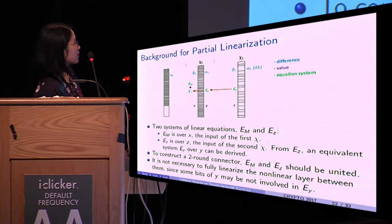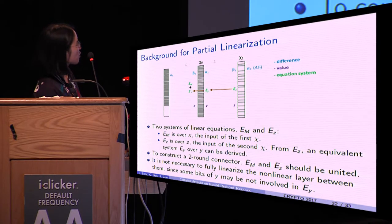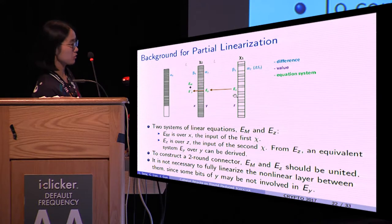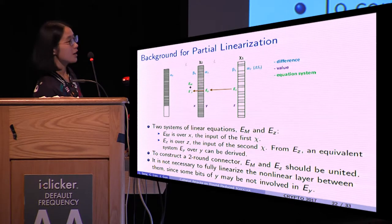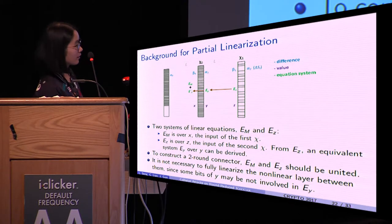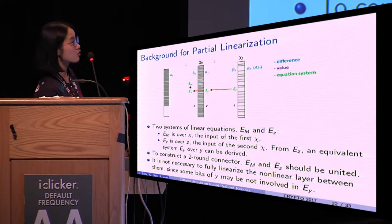To construct a two-round connector, these two equation systems Em and EY should be merged. Fully linearizing the first round is a means to this end.